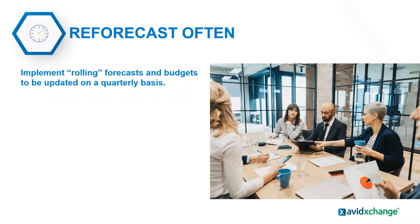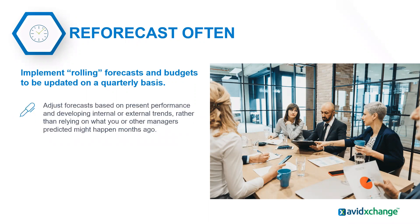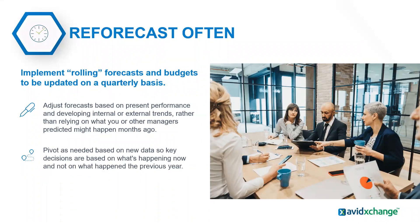Number four: reforecast often. Don't just set and forget your forecast once a year. This will allow your company to better align your budgets and improve the accuracy of your forecast. Base those forecasts on present performance and developing internal or external trends, rather than relying on what you or other managers predicted months ago. Pivot as needed based on new data so decisions are based on what's happening now, not on the previous year.